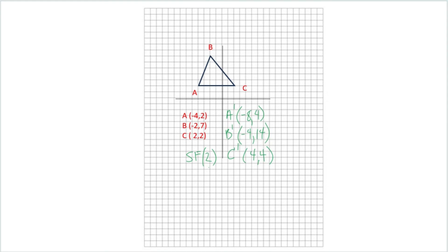So if I plot my prime, I'm going to go to negative eight, four for my new A. This would be my new A. My new B would be at negative four, fourteen. So my B prime is all the way up here. And then C would be four, four. So I would go over here. So this is where C prime would be. And then I would draw my enlarged triangle because my scale factor was greater than one.